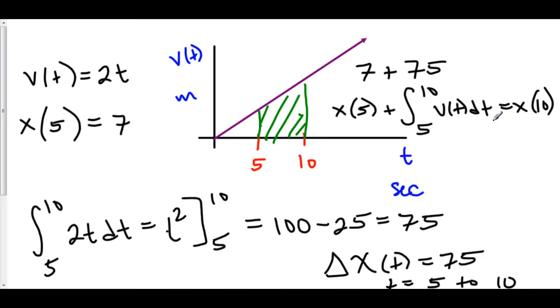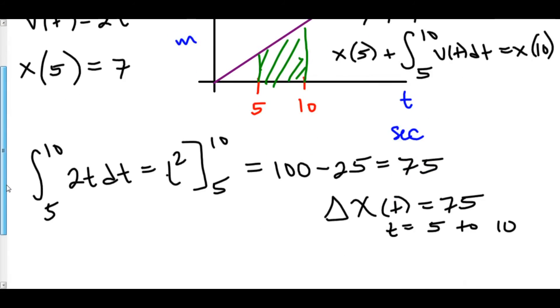So to find the position at time B, we took the position at time A, plus the net change in position from A to B. Now let's generalize this.